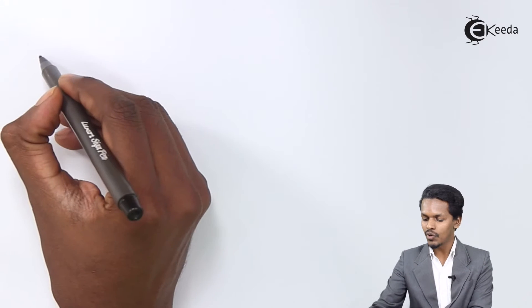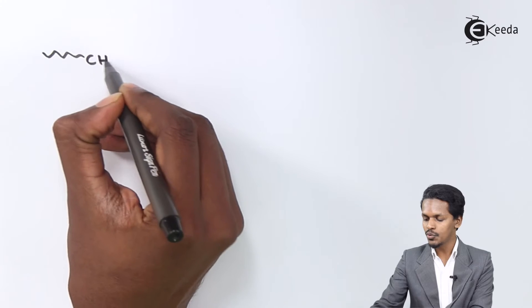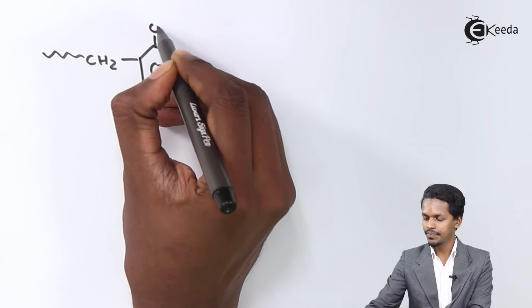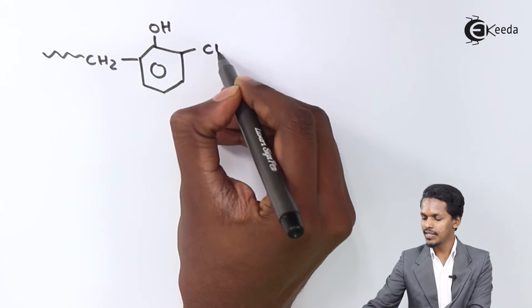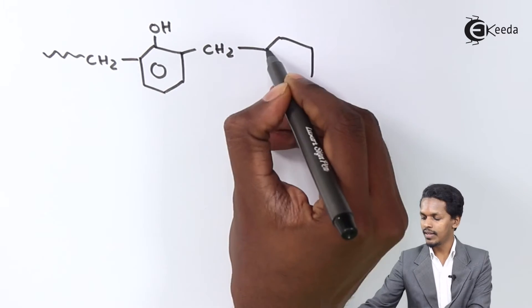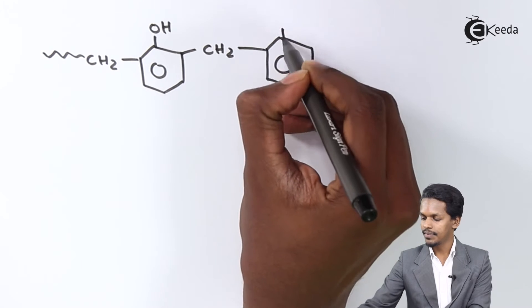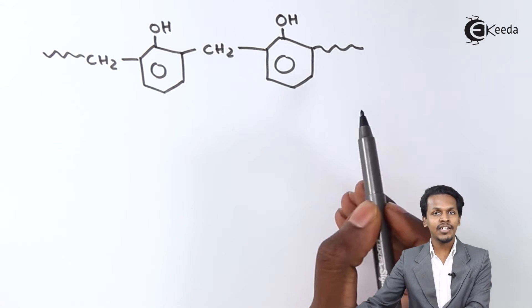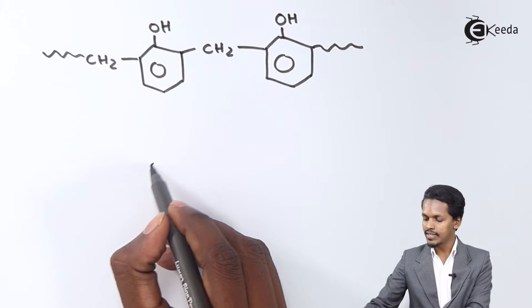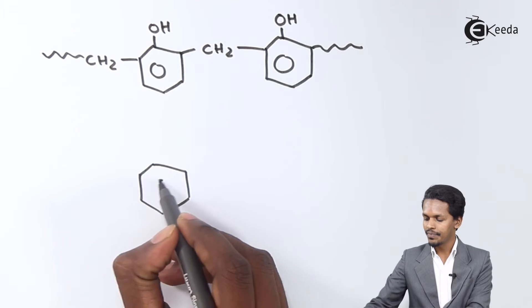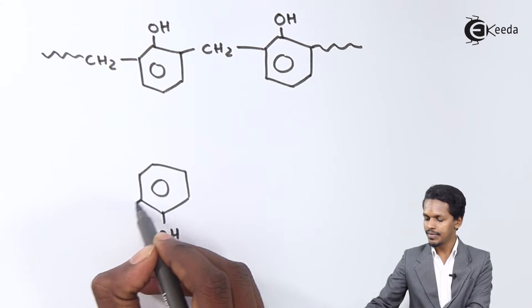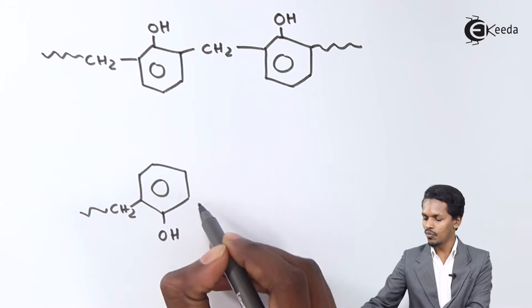The structure I'm representing here is CH2, a ring, as well as CH2 bonded with another phenol. This is one linear chain. The other one—I'm drawing two linear chains of Novolac.